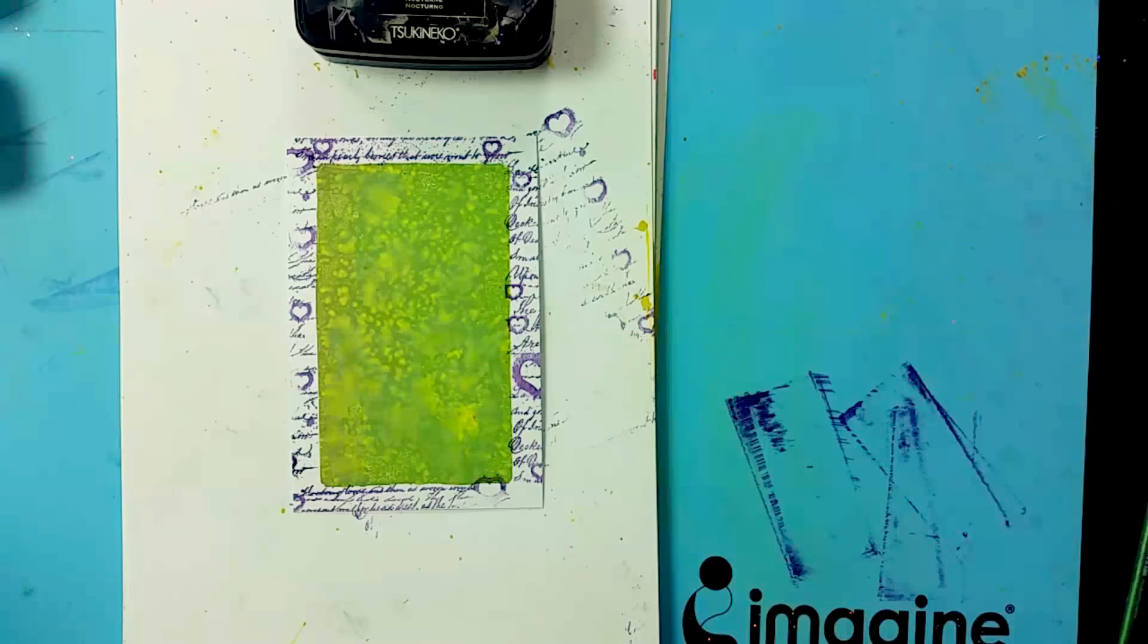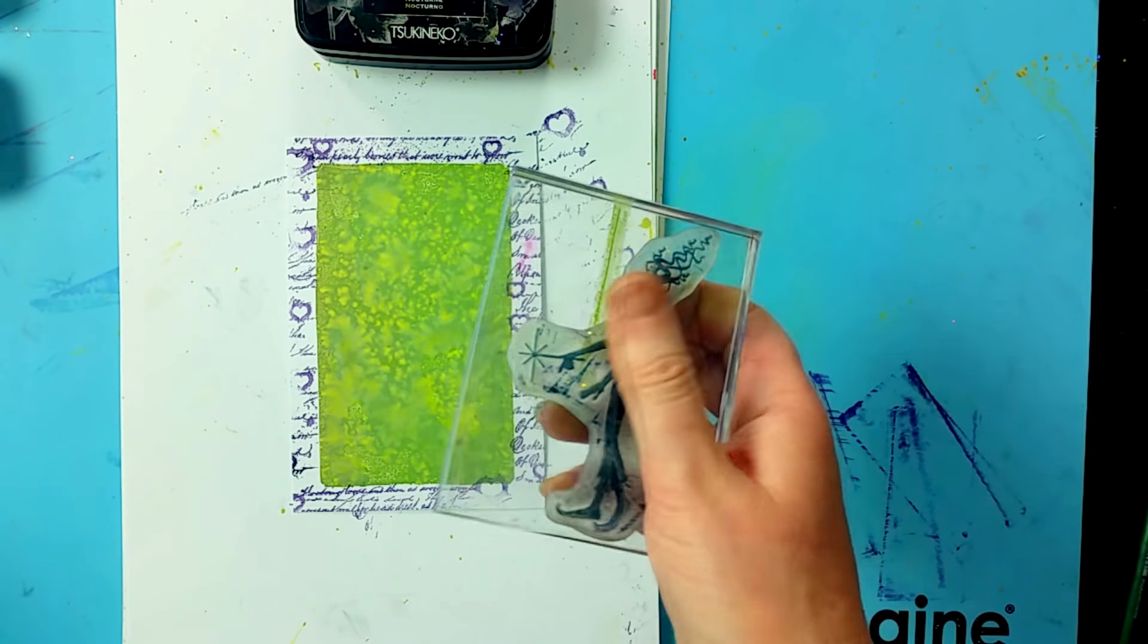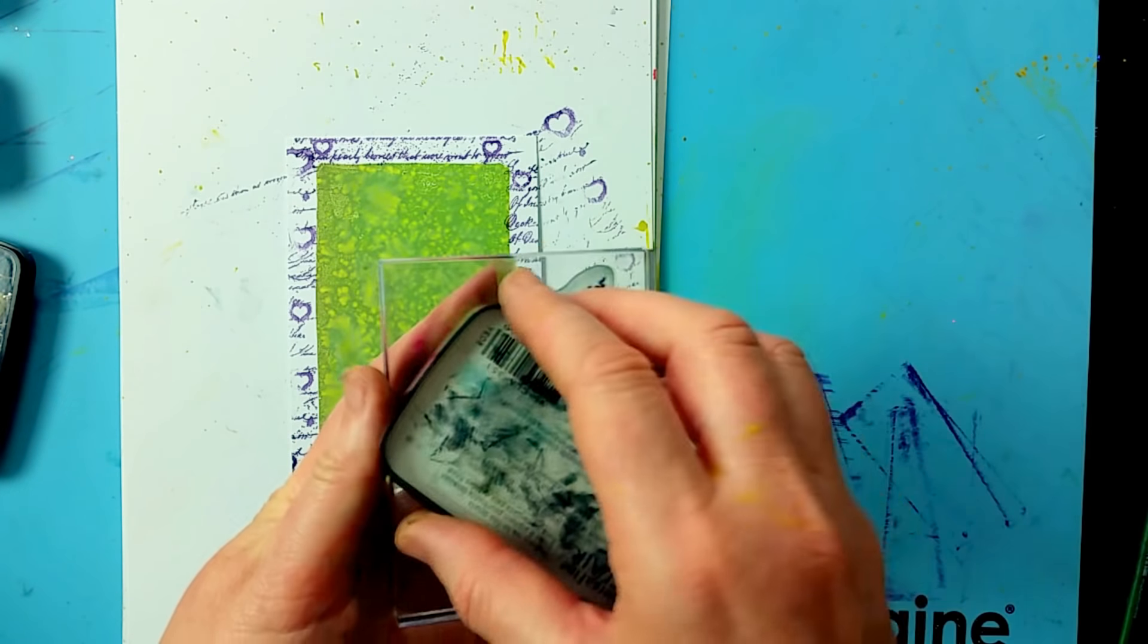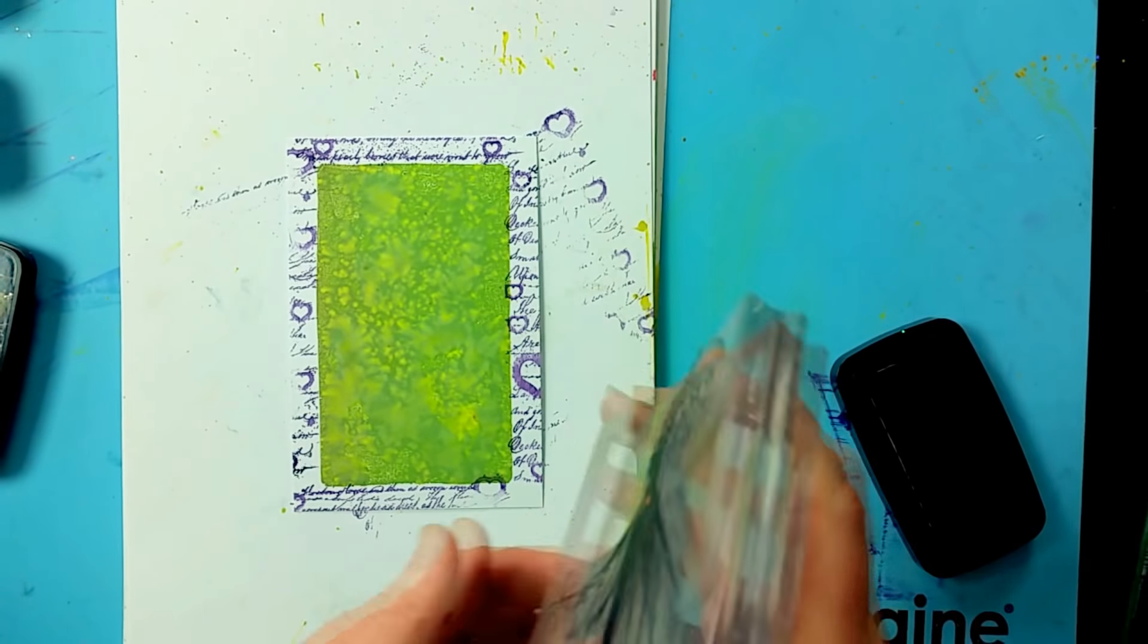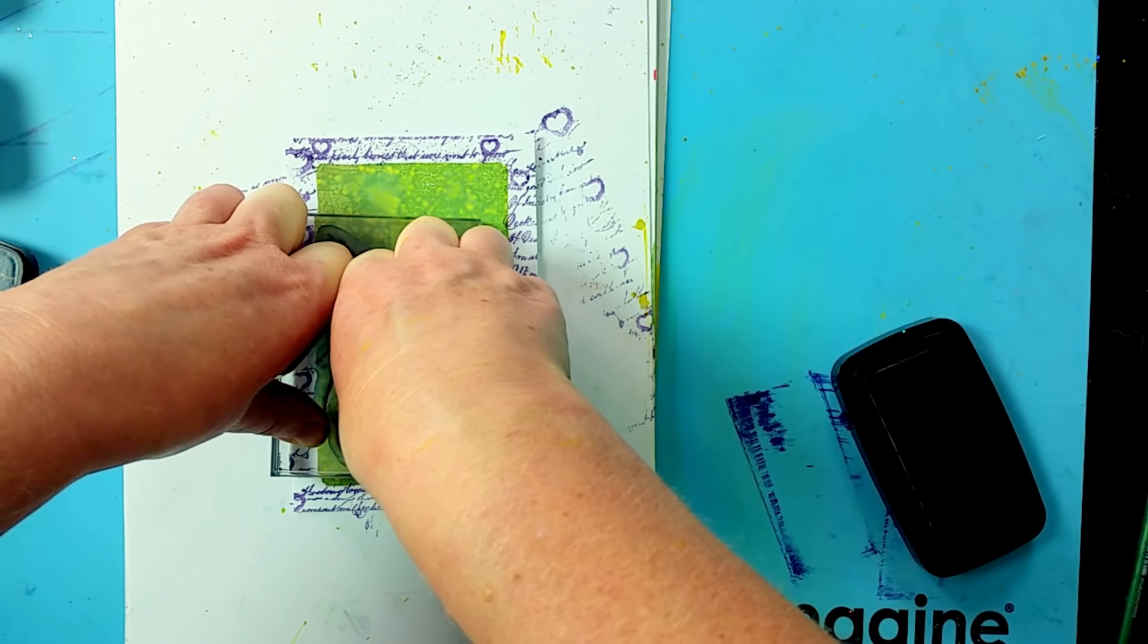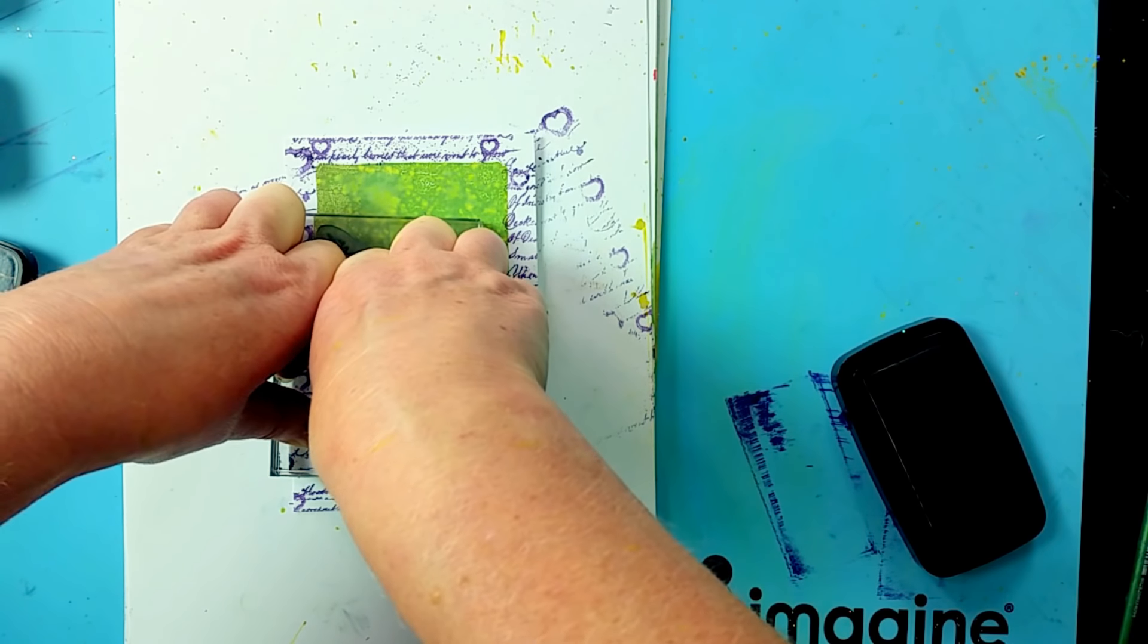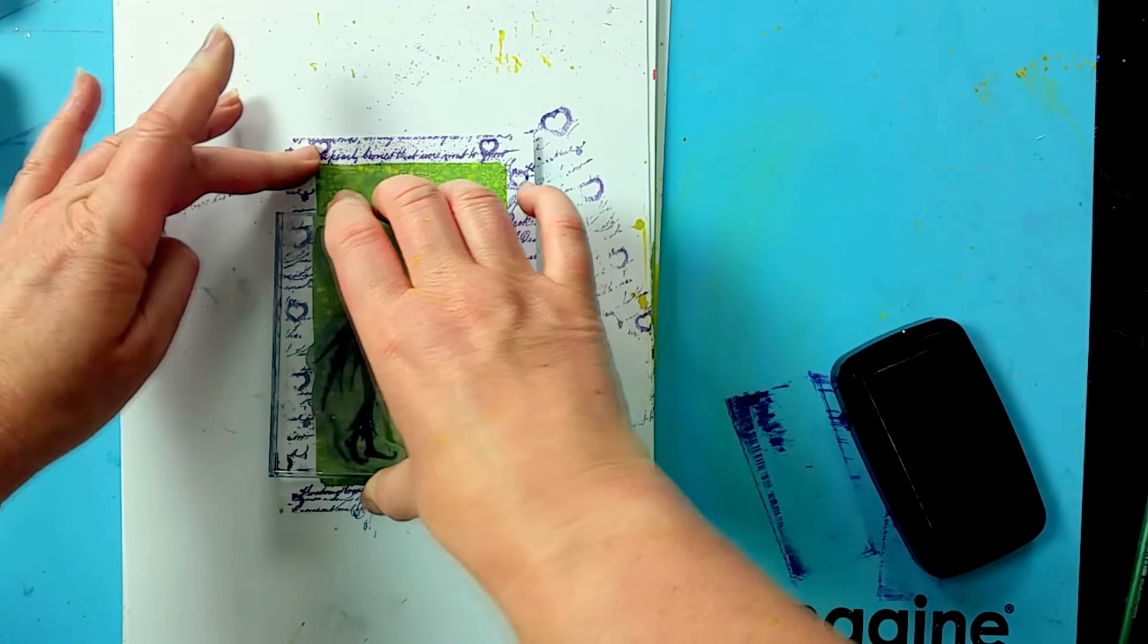Taking one of our fairy stamps, we're going to pop her on our perspex block. This time we're going to ink up in Nocturne, which is the black. Just check that she's completely covered, then we're just going to pop her down, give that a nice press. Just spend a bit of time with this because they're silhouette stamps - they need to soak into the card, so don't be too impatient. Just let it sit for a while.